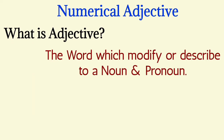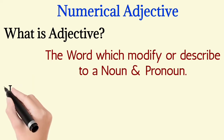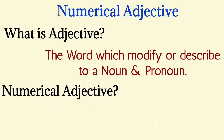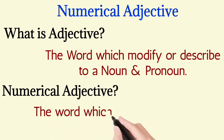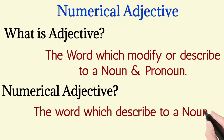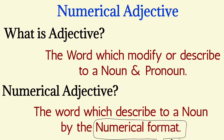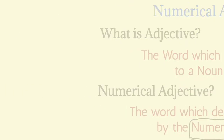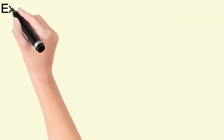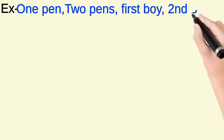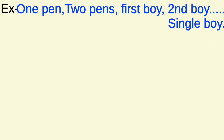Now we discuss the numerical adjective. Numerical means number, so a numerical adjective is a word which describes a noun in a numerical format. For example: one pen, two pens, first boy, second boy, single boy.